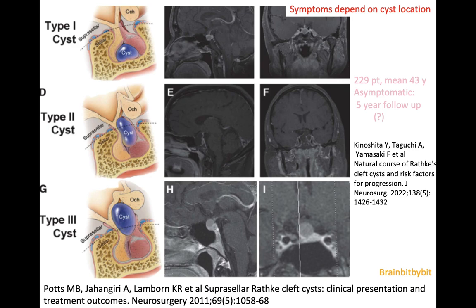The symptoms of a Rathke's cleft cyst depend on the location. Rathke's cleft cysts can be located sellar, suprasellar, or along the pituitary stalk. Most Rathke's cleft cysts are asymptomatic. There was an article in Neurosurgery in 2022 where they looked at 229 patients with a mean age of 43, and they suggested that if you have an asymptomatic Rathke's cleft cyst, a five-year follow-up to exclude growth might be useful.